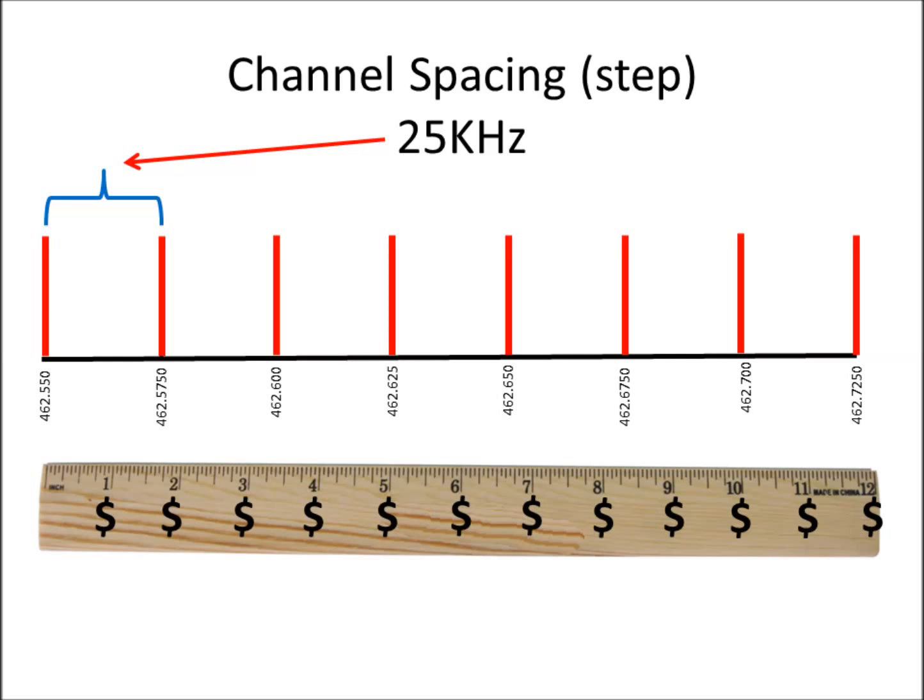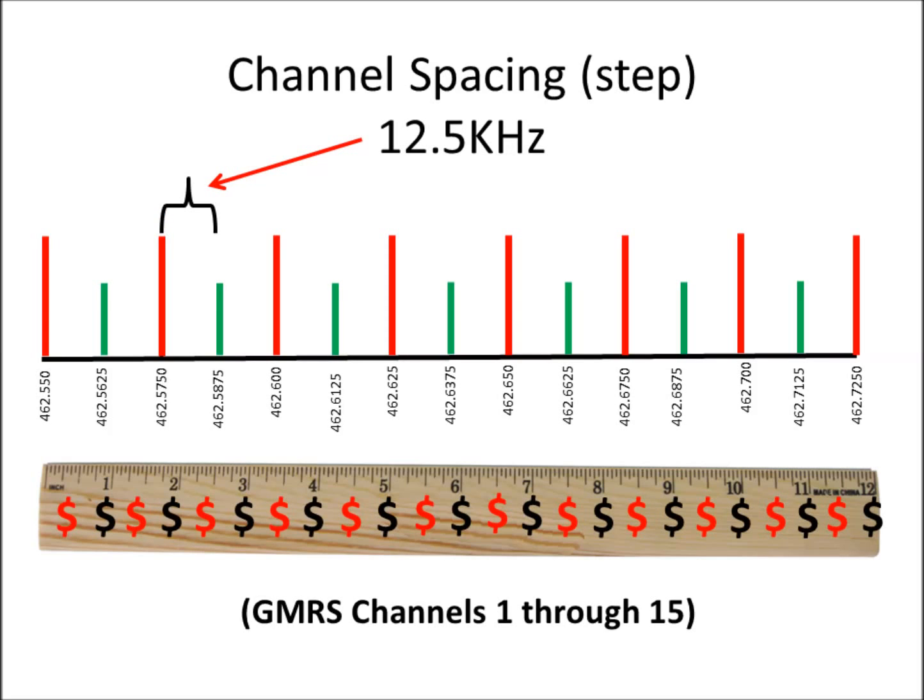As technology has improved and radios have become a little bit better, they came up with a solution to make more money and that was to double the number of channels issued in the same amount of space. So instead of issuing a channel every inch, they cut that channel spacing down by half and now they issue a channel every 12.5 kHz, and if you look at the ruler you can see you double your money. But if you cut your channel spacing in half, you have to cut the bandwidth of the channel in half as well or you'll overlap each other.